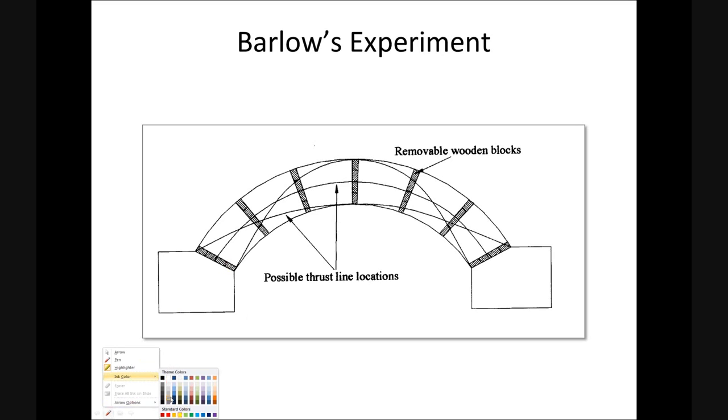And this was nicely shown by William Barlow in the early part of the 19th century, who constructed an arch with six voussoirs, and between each voussoir there were four timber blocks. And he showed that you could remove all but one of those blocks and still demonstrate that the arch could stand. For example, you could remove all the timber blocks other than the ones I've just shaded in red, and the arch will stand. And this is a nice practical demonstration of the multiplicity of lines of thrust in a masonry arch bridge.